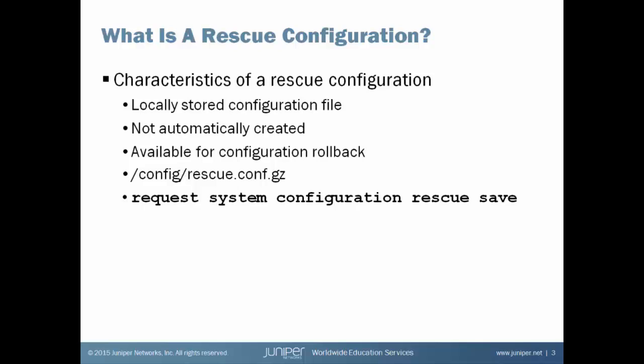With the 'request system configuration rescue save' command, a copy of the active config is stored locally. At any point in the future, I can return the device to that saved configuration by executing a 'rollback rescue' command. A rollback rescue will load the rescue.conf.gz file as my candidate configuration, and if I execute a commit command, I can return the device to the configuration stored in the rescue configuration file.